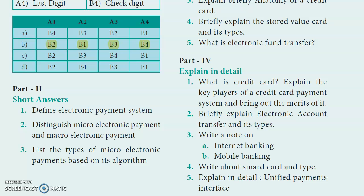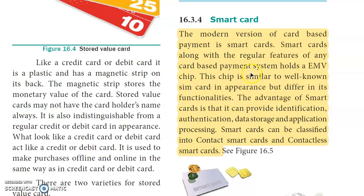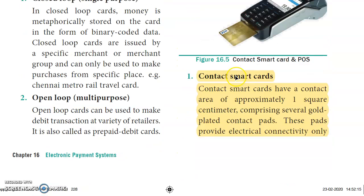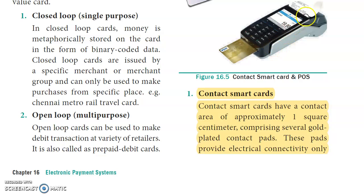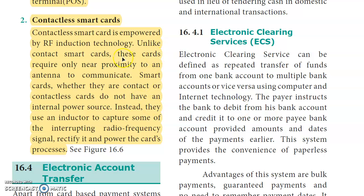Part 4, fourth question: Write about smart card and its types. Page 228: A smart card provides identification, authentication, data storage, and application processing. The two types are contact smart cards, which require insertion into a machine at the point of sale, and contactless smart cards, which use radio frequency to communicate via antenna so payment can be done by nearby proximity without physical contact.